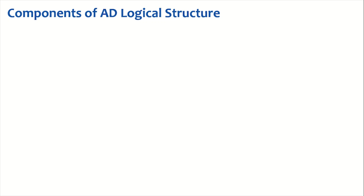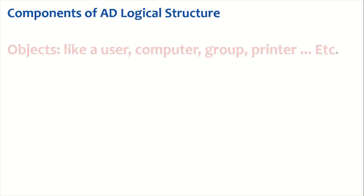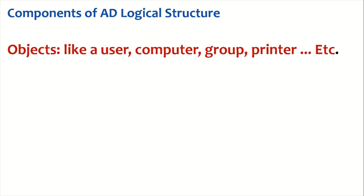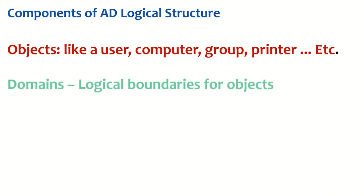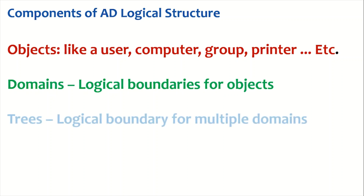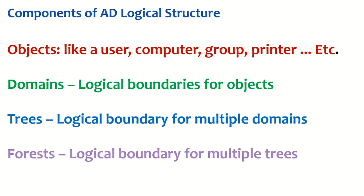The components of Active Directory logical structure are: objects (like users, computers, groups, printers), domains which are logical boundaries for objects, trees which are logical boundaries for multiple domains, and forests which are logical boundaries for multiple trees.